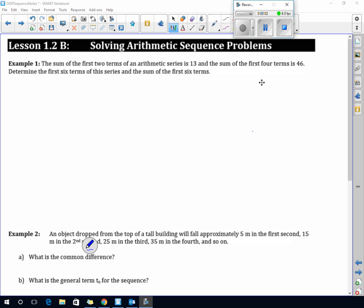The sum of the first two terms is 13, which we write in algebra as S2 equals 13. The sum of the first four terms, S4, is 46. That's all I know, so I need to figure out which formula to use.